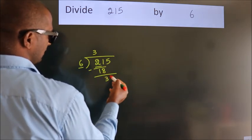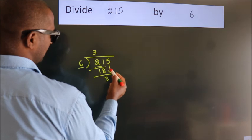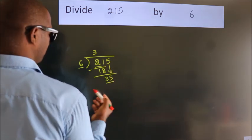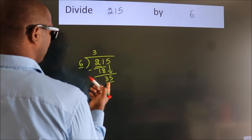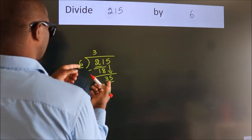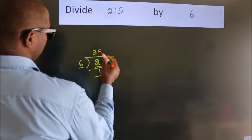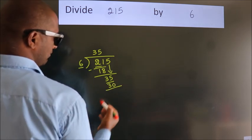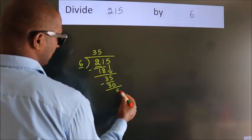After this, bring down the beside number. So 5 down. So 35. A number close to 35 in 6 table is 6 fives 30. Now we subtract. We get 5.